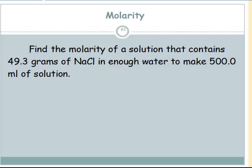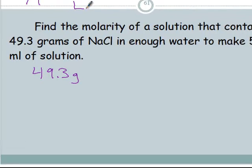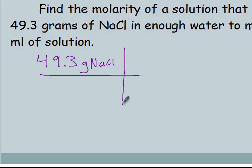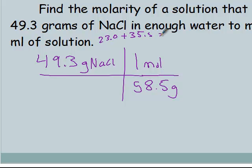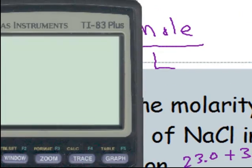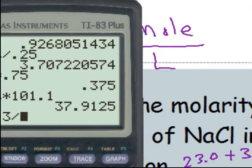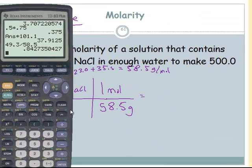Find the molarity of a solution that contains 49.3 grams of NaCl and enough water to make 500 milliliters of solution — not in 500 milliliters of water, but enough water to make 500 milliliters of solution. Molarity equals moles of solute divided by liters of solution, so I need to change 49.3 grams to moles. The molar mass of NaCl — 1 Na plus 1 Cl — is 58.5 grams per mole. So 49.3 divided by 58.5 gives me 0.84.